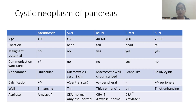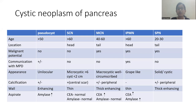Mucinous cystic neoplasm is common in the 40–60 age group, usually in the tail region, and can convert to malignancy. It appears macrocystic and well-circumscribed, may show peripheral calcification, thick enhancing wall, and aspirate shows increased carcinoembryonic antigen and normal amylase. IPMN is usually seen in patients over 60 years, commonly in the head region. It can convert to malignancy, shows communication with the main pancreatic duct, presents as grape-like cystic lesions with a thin wall, and aspirate shows increased carcinoembryonic antigen and amylase.